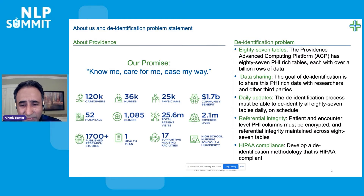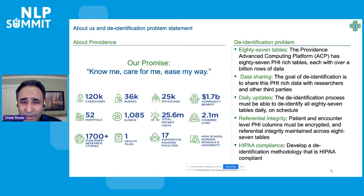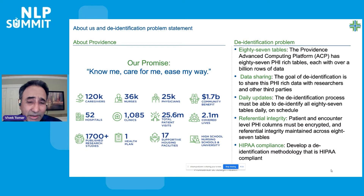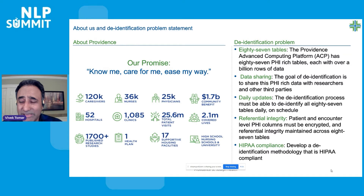The problem we were facing was that we have around 87 tables on our advanced computing platform, and each table has over a billion rows of data — that's sort of the minimum. But it's not just the number of rows; each row has large documents in it — unstructured data, free text data, whether it's lab results or patient notes. There are tons of information that is unstructured, and we needed a way to solve the de-identification problem for these tables.